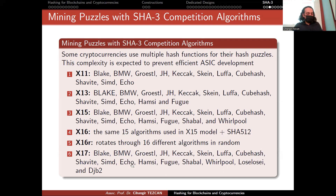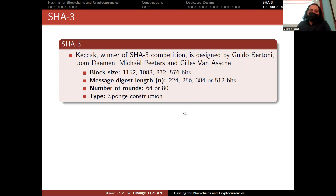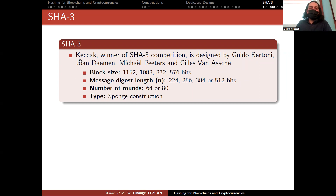There is also X17, which consists of 17 algorithms. Keccak was designed by Guido Bertoni, Joan Daemen, Michaël Peeters, and Gilles Van Assche. Joan Daemen was also the designer of AES with Vincent Rijmen. There is a joke that if Joan Daemen is in your team, you win the crypto competition — so if you plan to attend any crypto competition in the future, try to convince Joan Daemen to join your group.